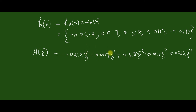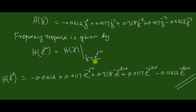Replacing z^0, then z^(−1), z^(−2), etc., once we have H(z), the frequency response can be obtained by replacing z with e^(jω). Replacing z with e^(jω), we get the final result as shown here. So we have solved the problem.